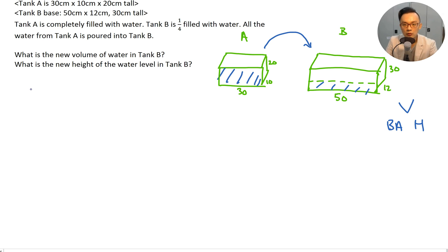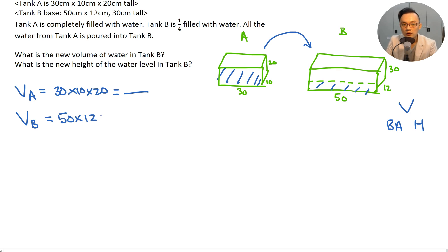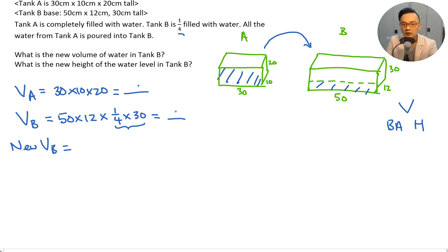Volume equals base area times height. New volume of water in Tank B: first find volume of water in Tank A, which is 30 times 10 times 20. Volume of water in B equals 50 times 12 times one quarter of the height, which is 30. This part is a bit tricky — one quarter of 30. The new volume in B equals the volume of A plus the volume of B originally, giving 10,500 cubic centimeters.